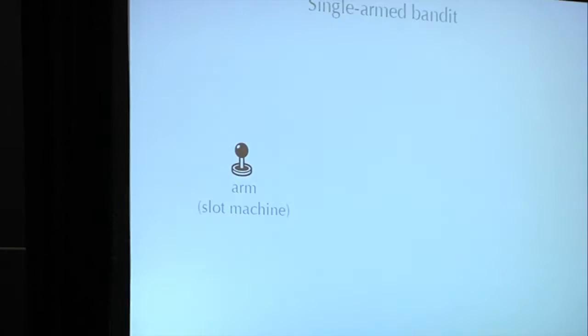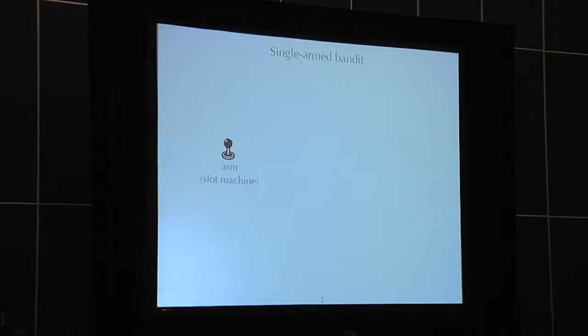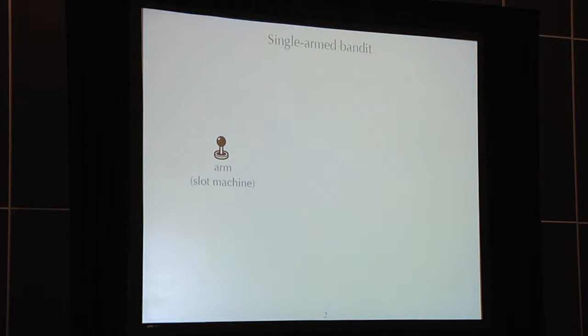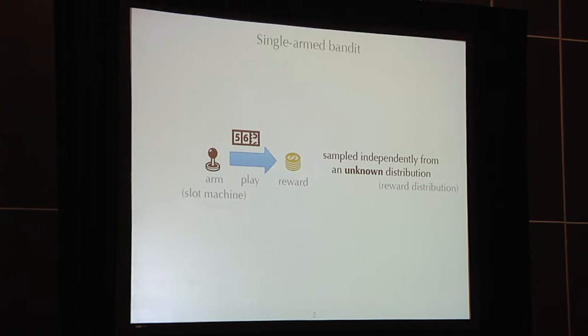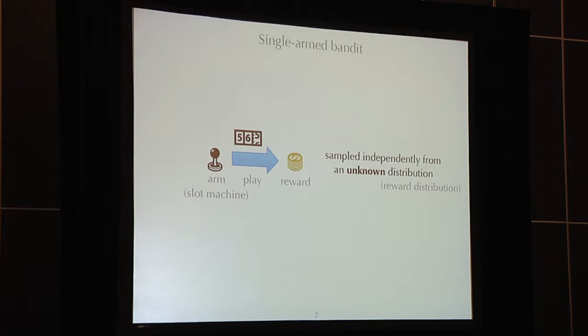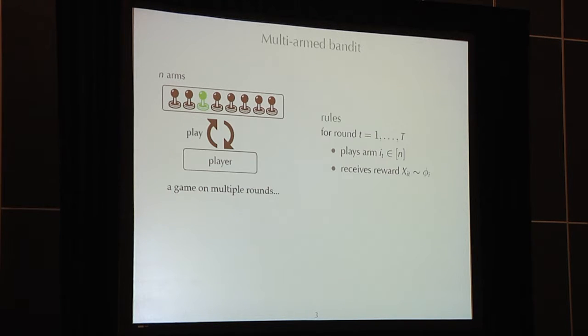The story starts with a single-armed bandit, which is the nickname for slot machines. It has one arm, and it robbed your money. But for the sake of optimism, let's say we get reward instead of losing money. So we play one arm and we get a reward, and the rewards come from unknown distributions. Now, say you are going to Las Vegas, you are facing not one, but a whole bunch, a whole row of armed bandits - N of them.